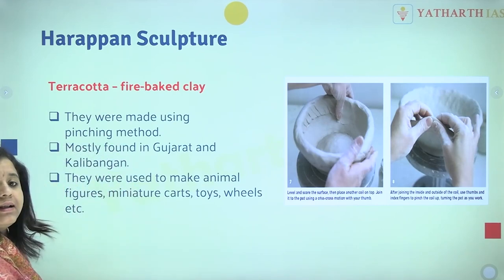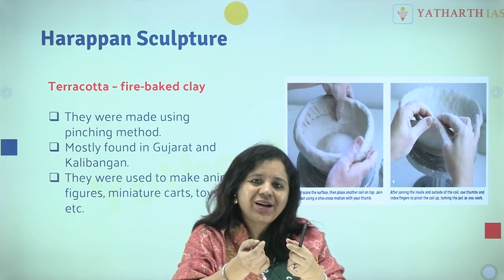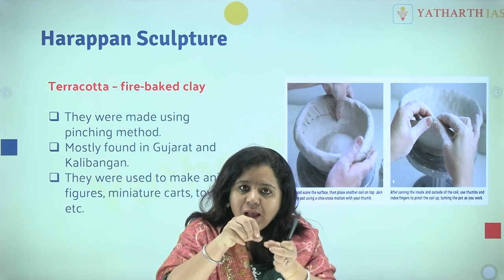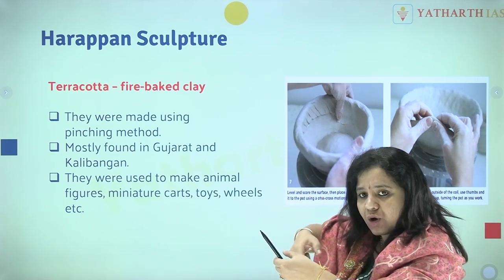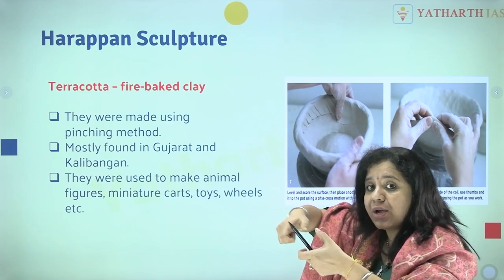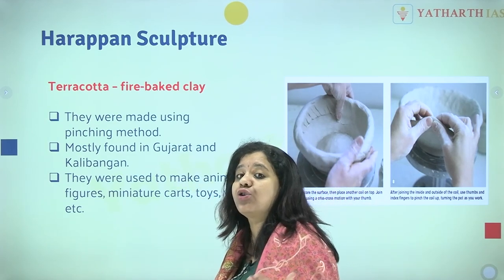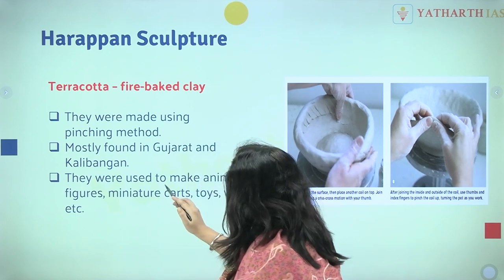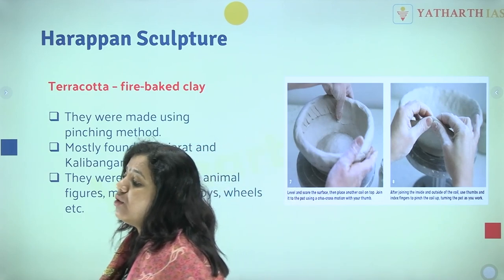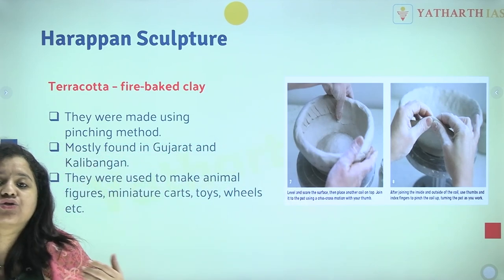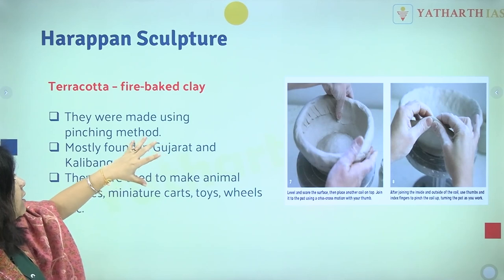Terracotta — fire-baked clay — was also used. They used to make it in the pinching method, like moulding dough. This was mostly found in Gujarat and Kalibangan, mainly because they had toy and bangle factories. They were used to make animal figures, miniature carts, toys, and wheels.